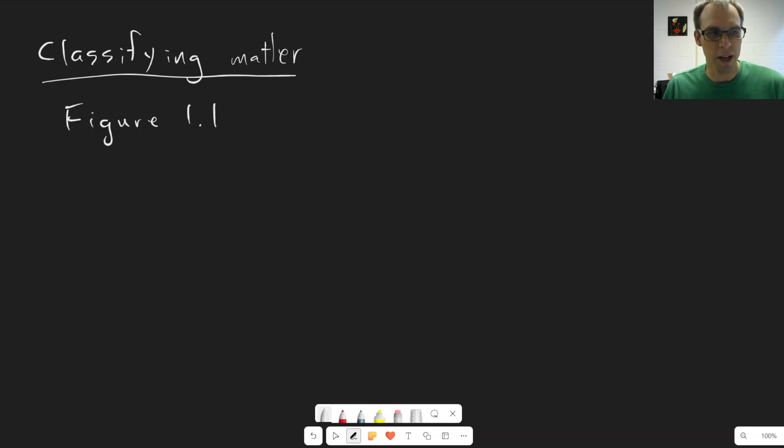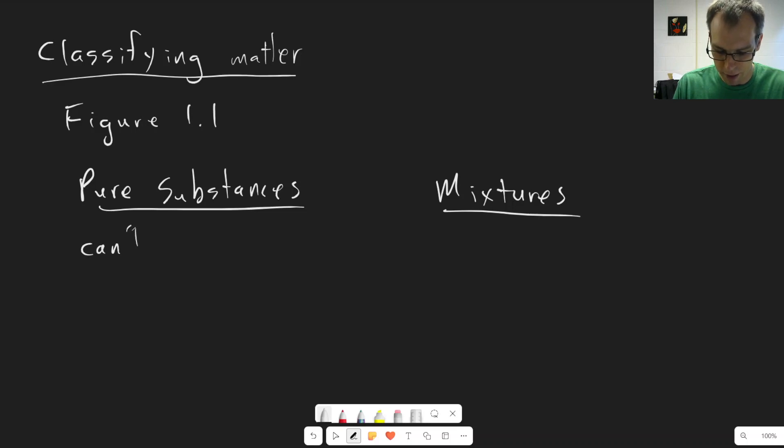There are two basic ways that we can classify matter. One is a type of matter called pure substances and the other is a type of matter called mixtures. Let's clarify exactly what we mean by this. A pure substance is something that can't be separated by physical processes.